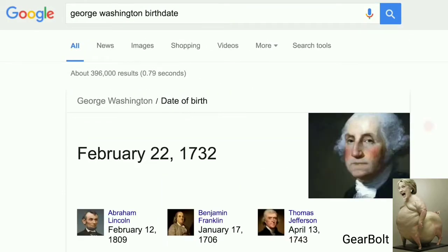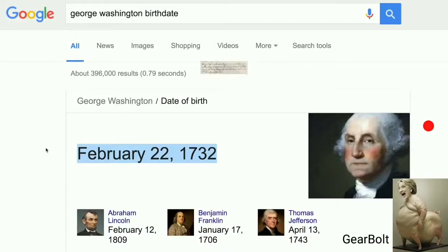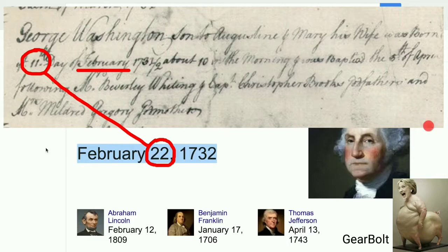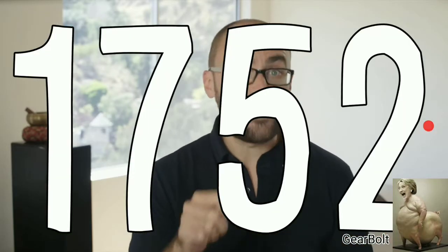Also, George Washington was born on February 22nd, 1732. At least, that's what we're told. However, his family Bible says he was born on February 11th, 1731 slash 2. So which is it, Mr. I-cannot-tell-a-lie? Oh, and don't even ask about 1752.